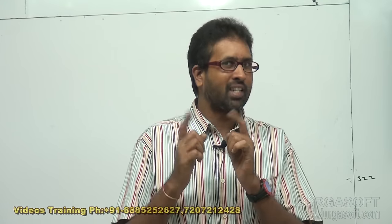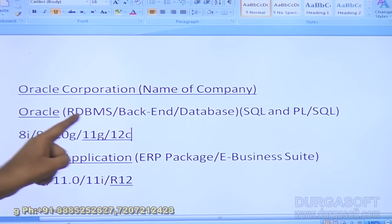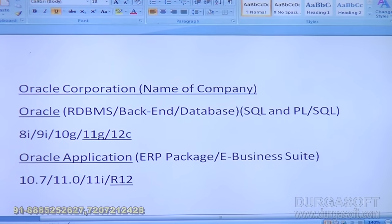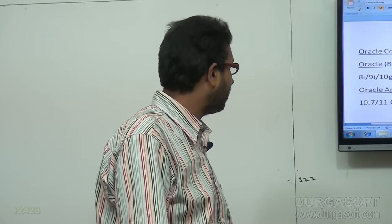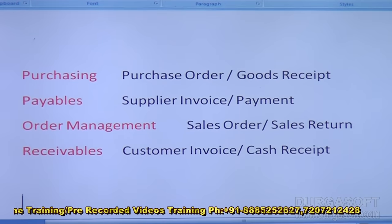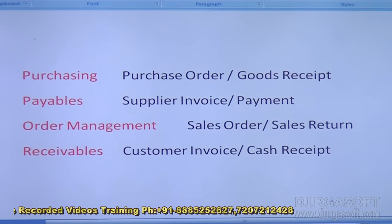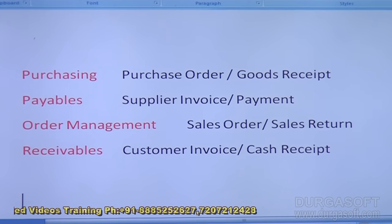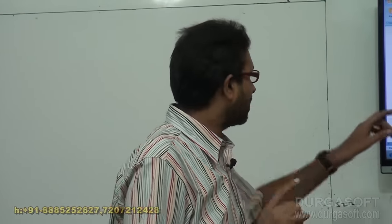Similarly, let me make you understand how Oracle and Oracle applications differ. Oracle is a database — a backend. Oracle application is an ERP. ERP consists of modules. For example — and this is just an example, Oracle has too many modules — Oracle applications consists of modules like Purchasing, Payables, Order Management, Receivables, and so on. These are just four example modules.